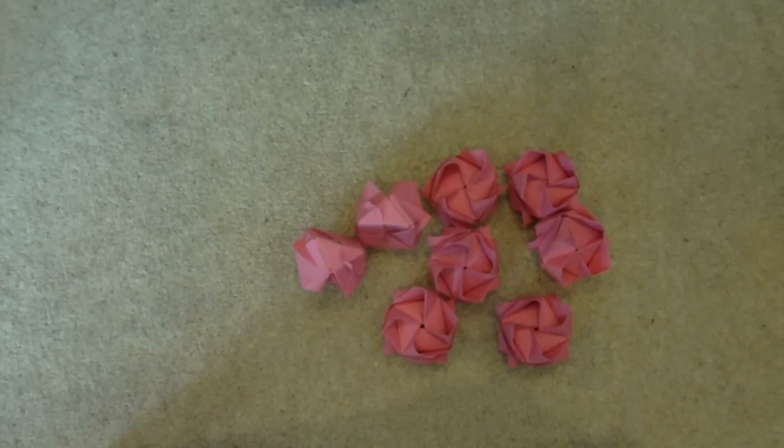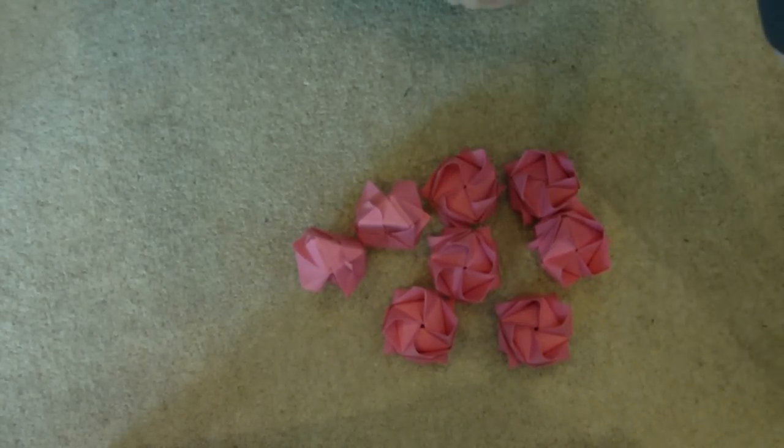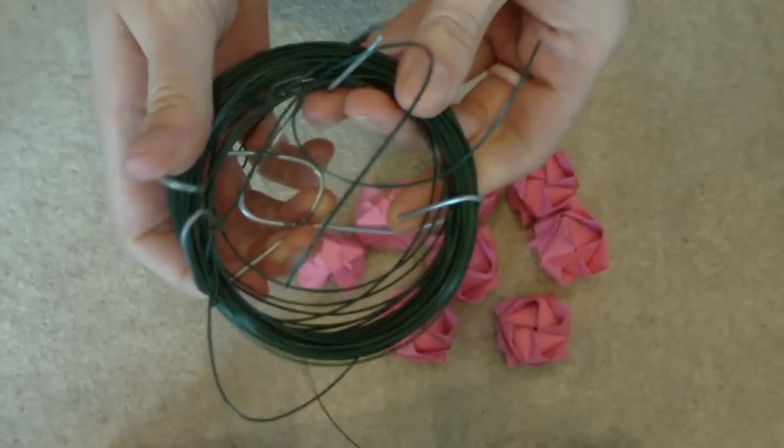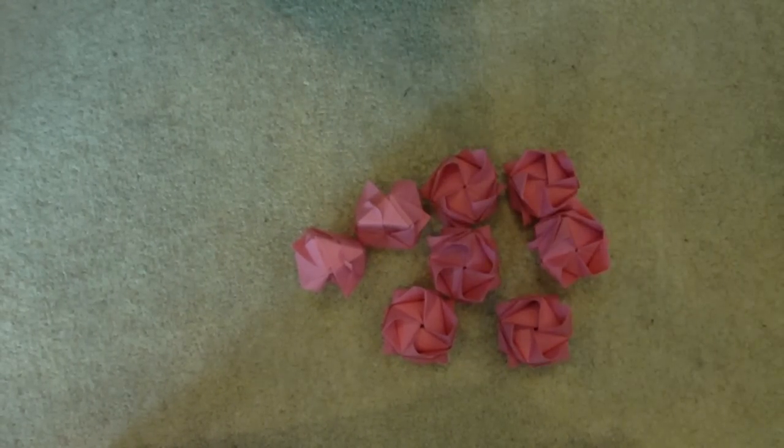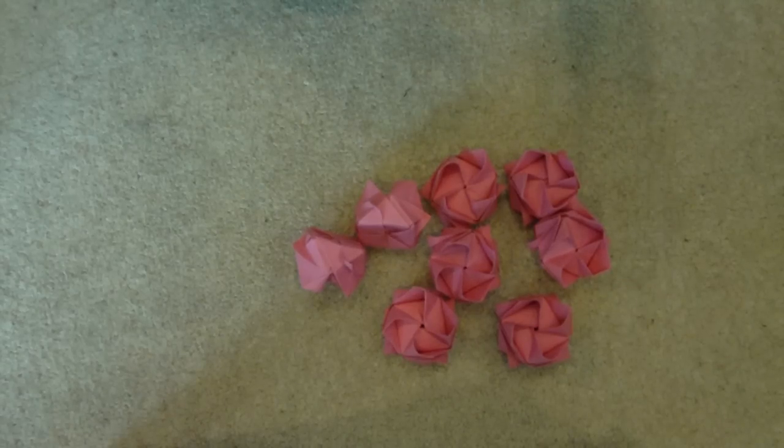You need to take the green garden wire. It looks like this. You need to measure from your wrist to your elbow, fold it in half, measure it back down to your wrist and then cut.